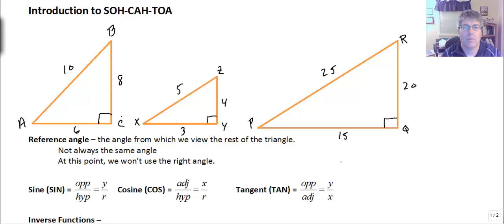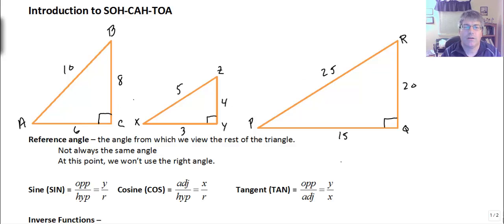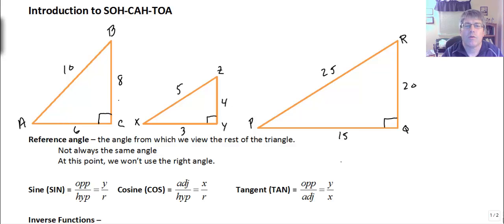They're the ratios of the lengths of the sides of a right triangle. I have three different right triangles here — they are all similar right triangles: a 3-4-5, a 6-8-10, and a 15-20-25. They're all similar, the same shape but different sizes. We know the angles of these three triangles are all the same. That's one of the things that makes trig pretty cool: the sine, cosine, or tangent of an angle is always the same for that particular type of similar right triangle.